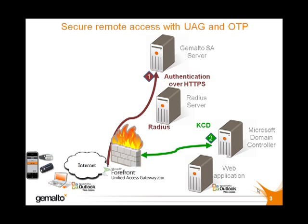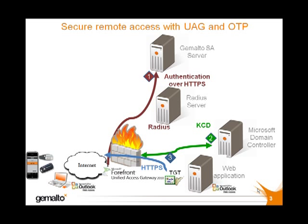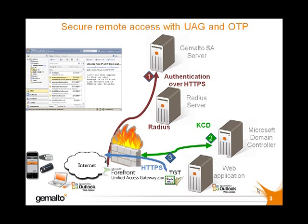So we can see this ticket, called TGT, going from the domain controller to UAG. UAG then sends this same ticket to Outlook Web Access. And if the ticket is accepted, then the user can access their application, in this case Outlook Web Access.